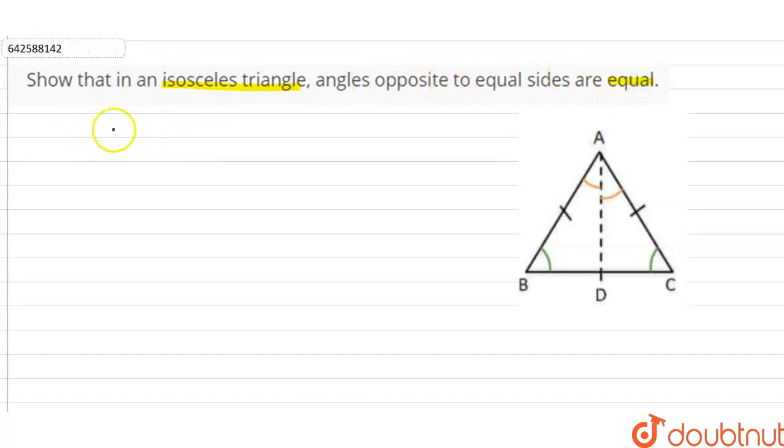So in the question, it is given that it's an isosceles triangle, so we can say that AB is equal to AC. The reason is it's an isosceles triangle.